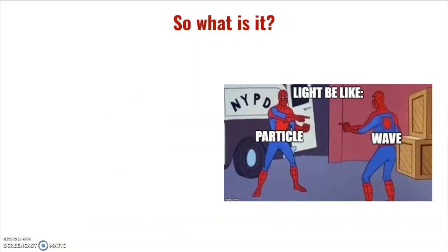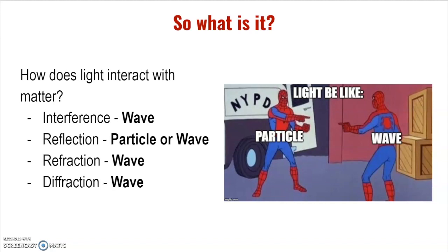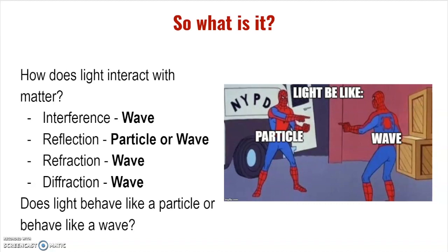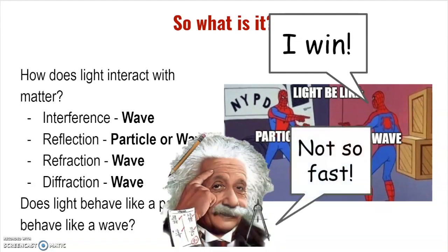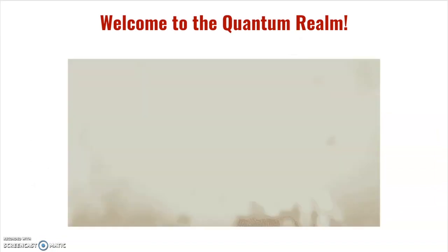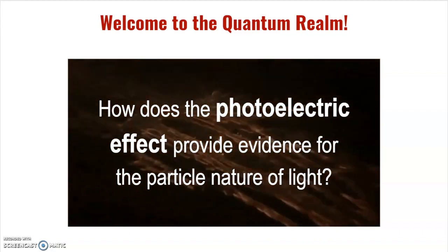This brings us back to our original question: what is light — a particle or a wave? Based on our evidence from interference, reflection, refraction, and diffraction, it seems like light is a wave, and that's what scientists believed for many years — until Einstein and other scientists discovered evidence that light could also behave like a particle. This brings us to the quantum realm, where we'll look at how the photoelectric effect provides evidence for the particle nature of light.